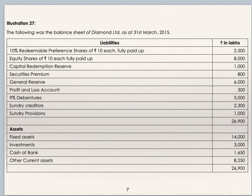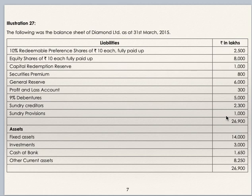Now we will see illustration 27. Following was the balance sheet of Diamond Limited as at 31st March 2015, rupees in lakhs. 10% redeemable preference shares of Rs 10 each fully paid: 2500. Equity shares of Rs 10 each fully paid: 8000. Then you have capital redemption reserve, securities premium, general reserve, profit and loss account, 9% debentures, sundry creditors, sundry provisions. Total liabilities is 26,900. On assets: fixed assets, investments, cash at bank, other current assets, total is 26,900.